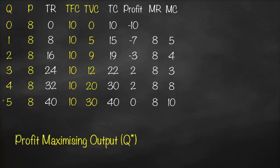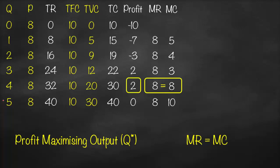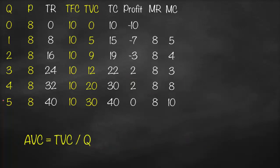The condition for profit-maximizing output is marginal revenue equals marginal cost. Looking at MR and MC, we see that 8 equals 8 at quantity 4, so our profit-maximizing output is Q*=4. We should produce 4 units. Looking at profit, we confirm the maximum profit at Q4, which equals 2.